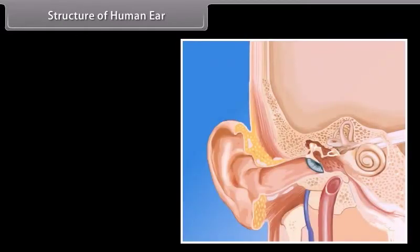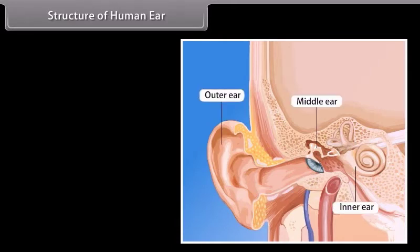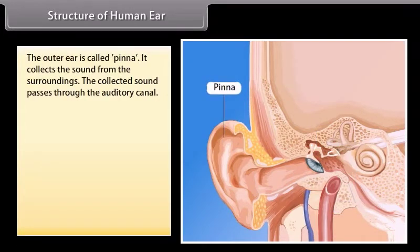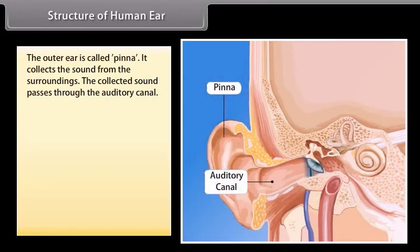Structure of the human ear. The ear consists of three basic parts: the outer ear, the middle ear, and the inner ear. Each part of the ear has a specific role in the task of detecting and interpreting sound. The outer ear is called pinna. It collects the sound from the surroundings. The collected sound passes through the auditory canal.